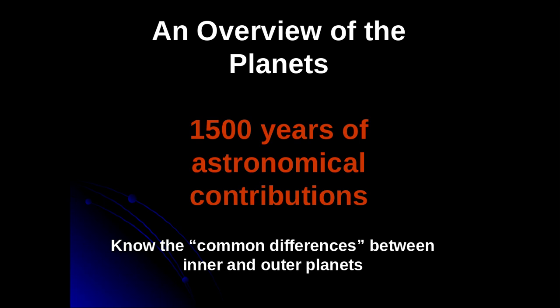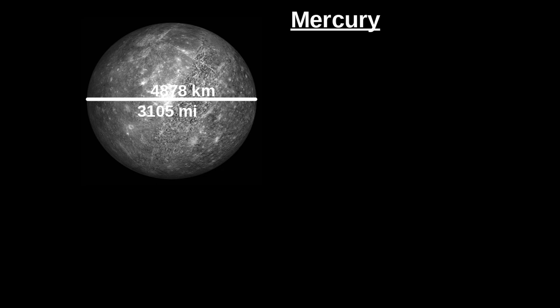The next section I'd like to look at is an overview of the planets. Here we have 1,500 years of astronomical contributions that scientists have discovered, and plenty of photos of the planets. I'm going to go through each one of the planets pretty fast, looking at some common planetary characteristics. Your job is to know the common differences between the inner and the outer planets.